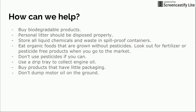What are some different ways we can help? We can buy biodegradable products. We can dispose of personal trash or litter properly. We can store liquid chemicals and waste in spill-proof containers. We can eat organic foods grown without pesticides, or look out for fertilizer or pesticide-free products when you go to the market, encouraging the growth of these types of plants and this type of farming.